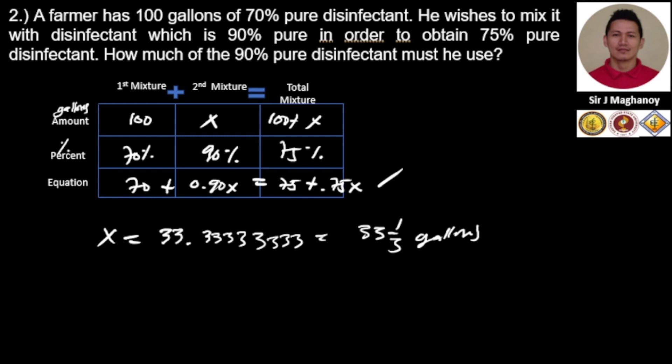That is 100. On the other side, 75 plus 0.75 times 33 and one-third, that is also 100.